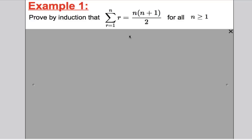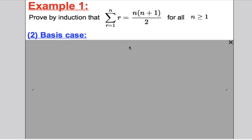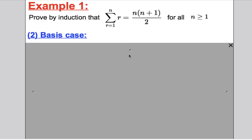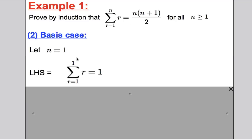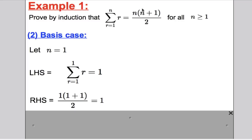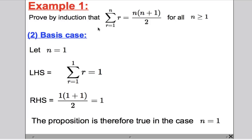Second, the basis case: you must explicitly check that the proposition is true for the first number. Since we're proving it for all n ≥ 1, the first number is 1. Let n = 1. The left-hand side is the sum from r = 1 to 1 of r — you're adding up 1 one time — giving 1. The right-hand side is 1 × (1+1)/2 = 1. The left-hand side equals the right-hand side, so the proposition is true when n = 1.